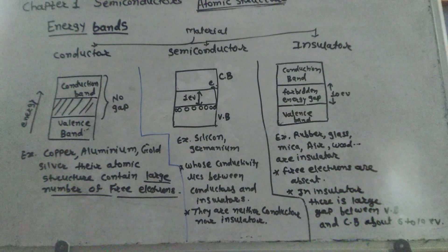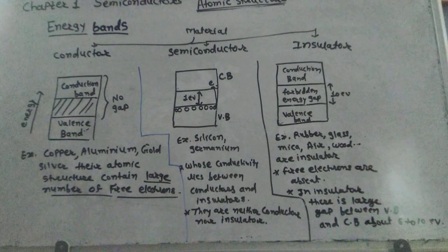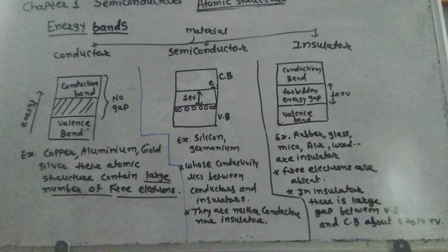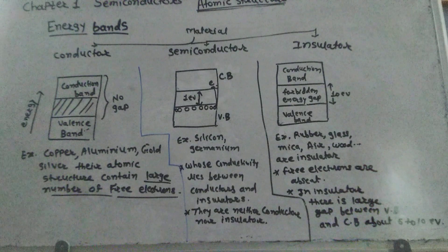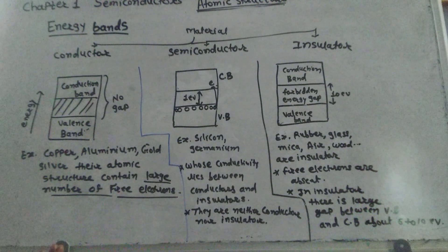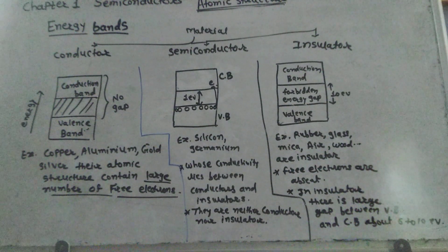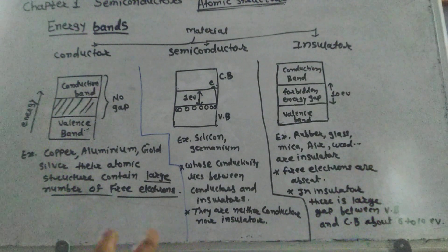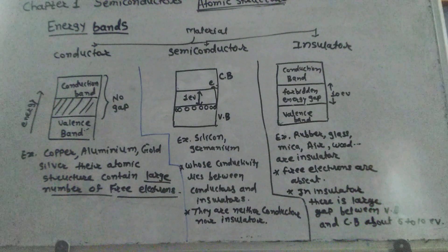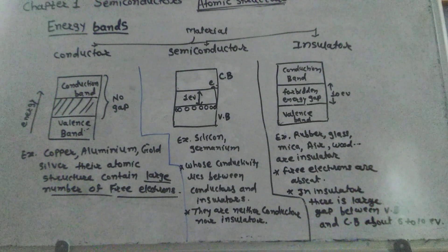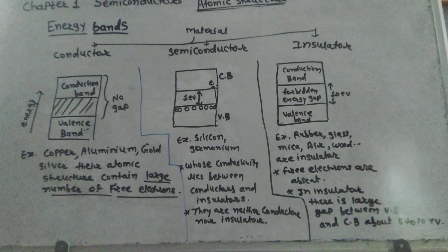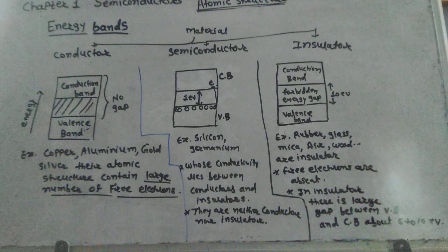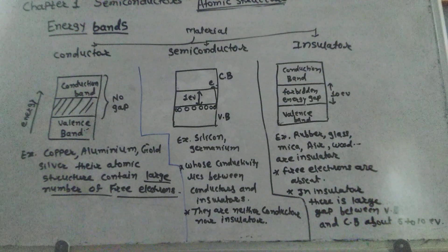The electrons are tightly bound by the nucleus and no free electrons are available for carrying current. All the electrons are bounded by the nucleus and tightly bound — there are no free electrons, and there is no conduction in the insulator. The forbidden energy gap in an insulator is about 6 to 10 electron volts. Such a large amount of energy cannot be supplied externally; hence, conduction is not possible.